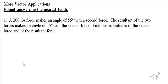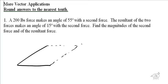If you remember, this is just drawing a nice little friendly parallelogram here. So it's the 200-pound force, and this is 55 degrees. Let's draw a resultant force. The resultant of the two forces makes 15 degrees — so that's our first force, and this is the second force. This is 15 degrees here.